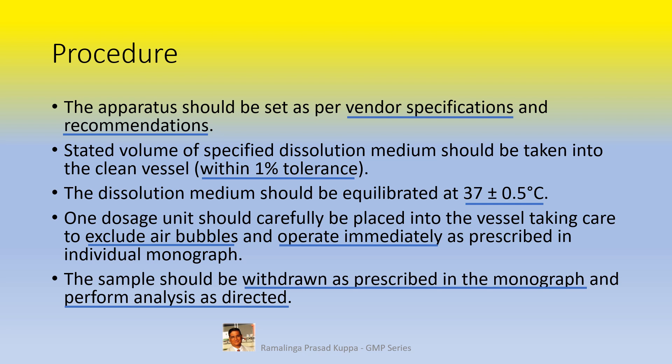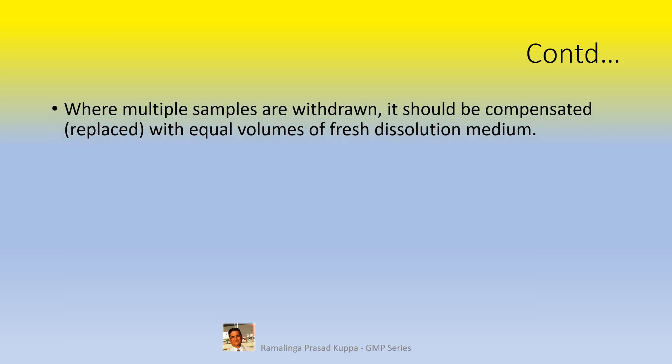Generally, the ranges will be at 20 to 30 percent, 50 percent, and 80 percent, etc. Samples should be withdrawn and analyzed as prescribed in the individual monograph. Where multiple samples are withdrawn, they should be compensated or replaced with equal volumes of fresh dissolution medium. This point should be noted carefully — when samples are withdrawn, there is a loss of dissolution medium, so it should be compensated. The fresh replacement should be from the same dissolution medium and maintained at 37 degrees Celsius.